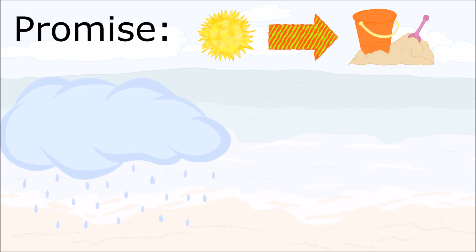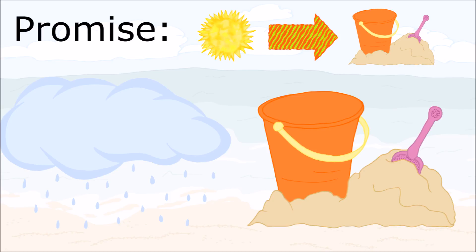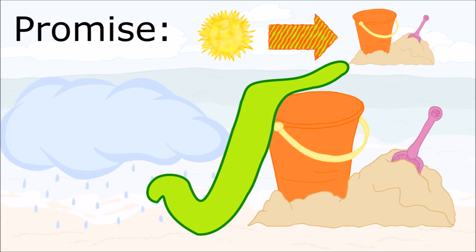Now, what happens if it's not sunny? The day of the trip, it's raining outside. The truth value for the hypothesis — if it is sunny — is false. What does that mean about my promise? Well, what happens if, in spite of the weather, we decide to go to the beach anyway? I only said we would go to the beach if the weather was sunny. I didn't say anything about what we would do if the weather was wet. So did I break my promise? I kept my promise. I promised you that if the weather was sunny, we would go to the beach. The weather wasn't sunny, but we still went to the beach.